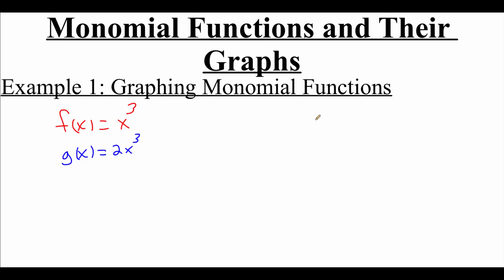Now we're going to look at another pair of functions. Let's say we had h of x equals x to the fourth compared to j of x equals negative two thirds x to the fourth. Looking at the k value on our second function, we've got that two thirds — since it's a fraction less than 1, we should think about that as a vertical shrink, so our graph is going to be shorter than our original. We've also got that negative out in front, which is an x-axis reflection, so we're going to flip this graph over our x-axis along with it being shorter.